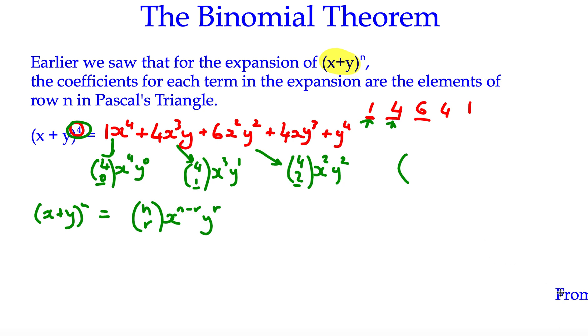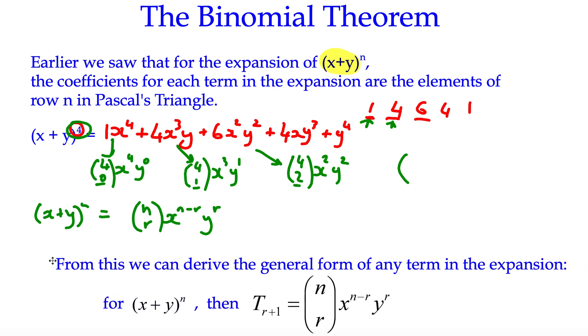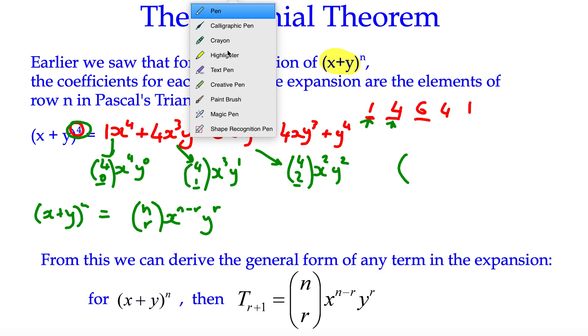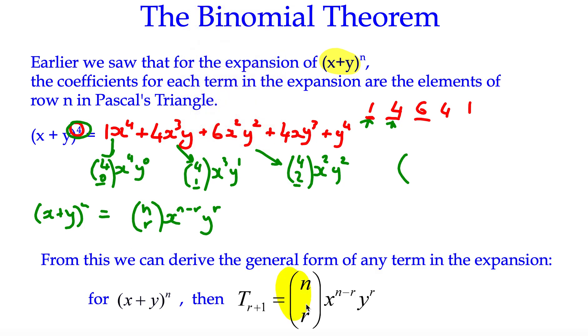I'll bring this in just as a confirmation of that. We can derive the general form of any term. Each term follows the same structure. You can see we've got the first part is our combination. We've got a power of x, a power of y, and the way in which we can predict what these powers are going to be.